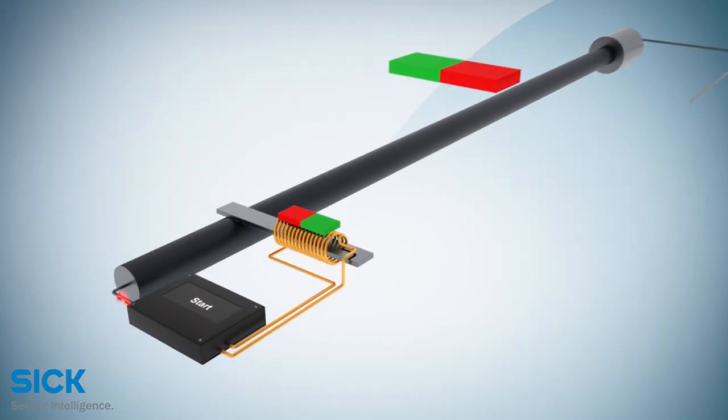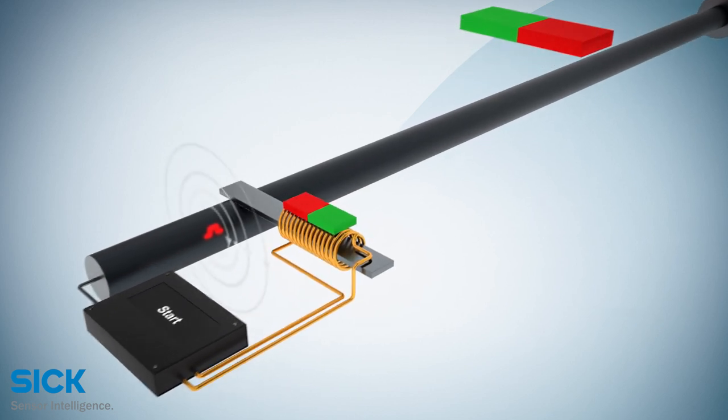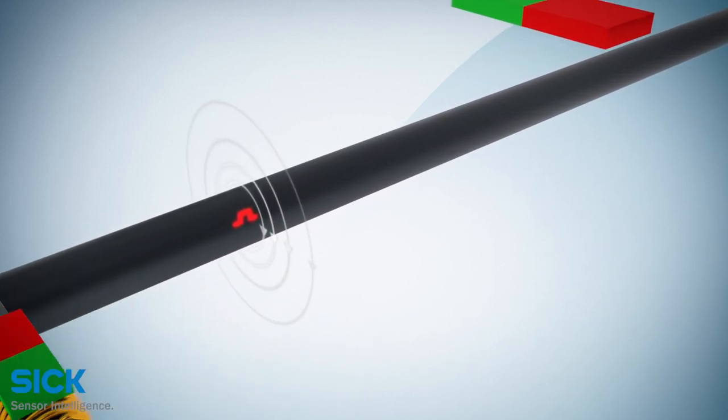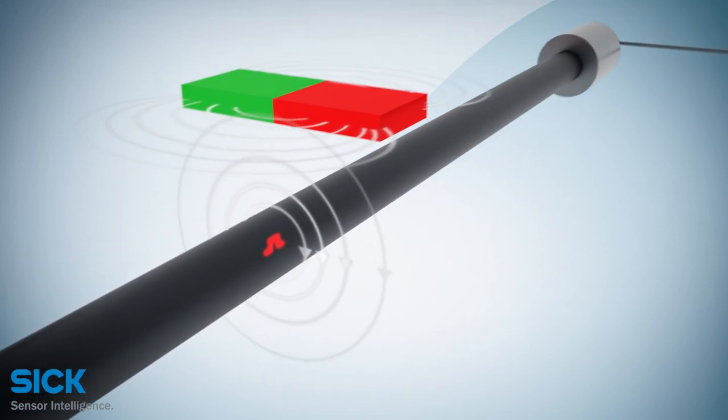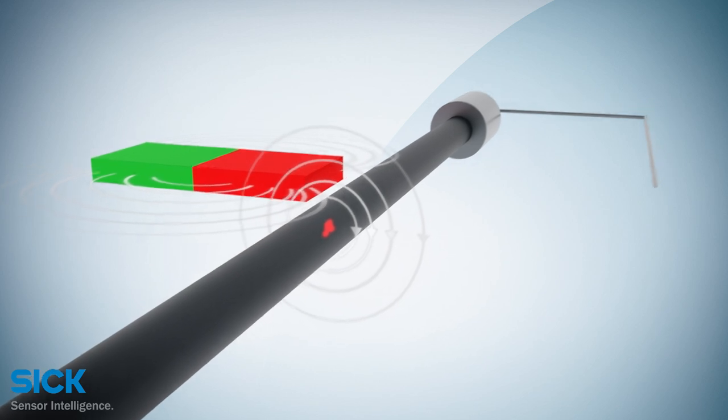A short current pulse is applied to the waveguide and creates a radial magnetic field. The position magnet, which is connected to the movable machine part, generates a magnetic field at its location on the waveguide.